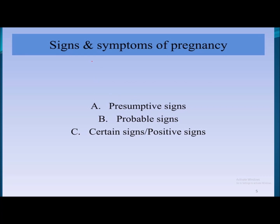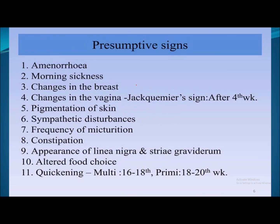There are three categories of signs and symptoms of pregnancy: presumptive signs, probable signs, and certain or positive signs. The presumptive signs include amenorrhea and morning sickness, which is seen due to various hormonal changes.